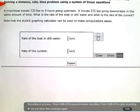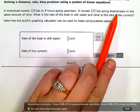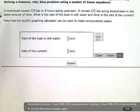Solving a distance-rate-time problem using a system of linear equations. A motorboat travels 120 kilometers in 4 hours going upstream. It travels 232 kilometers going downstream in the same amount of time. What is the rate of the boat in still water and what is the rate of the current?